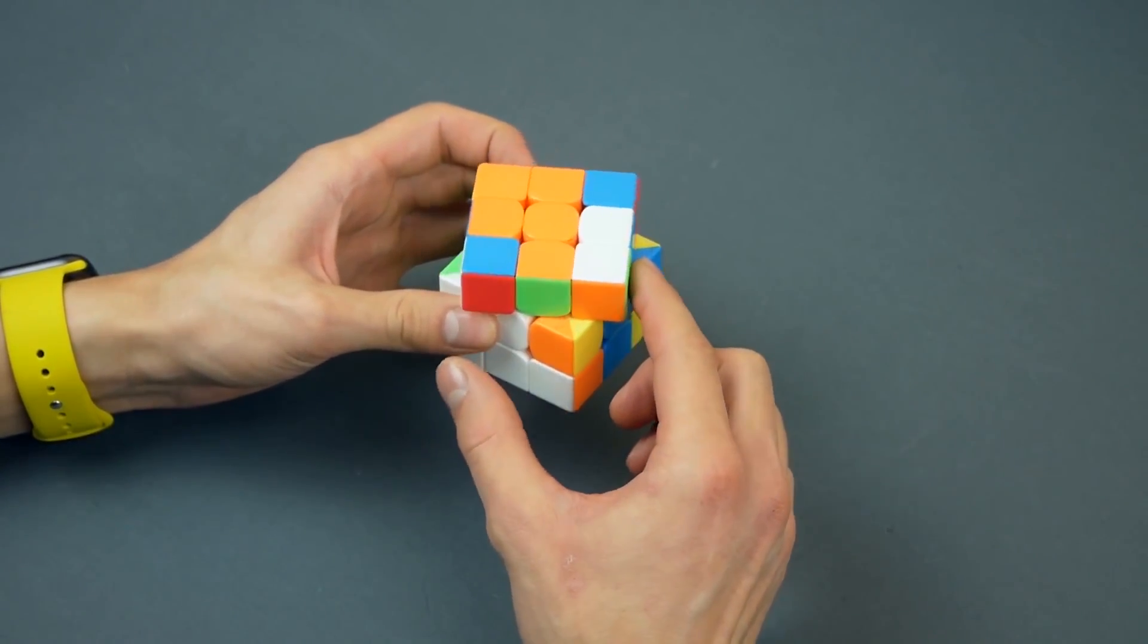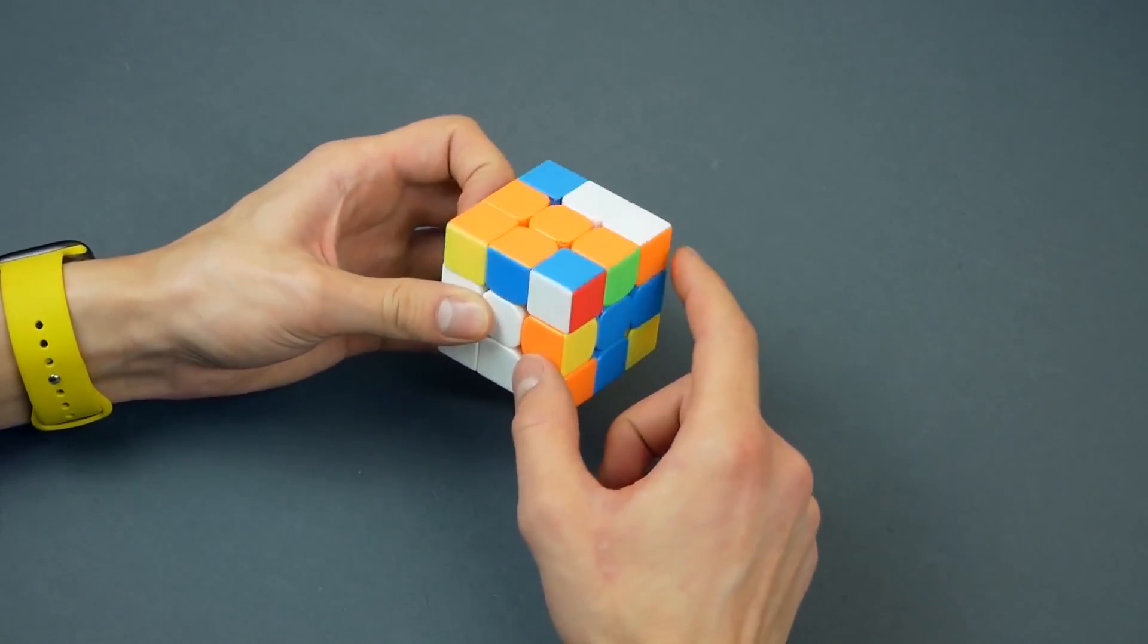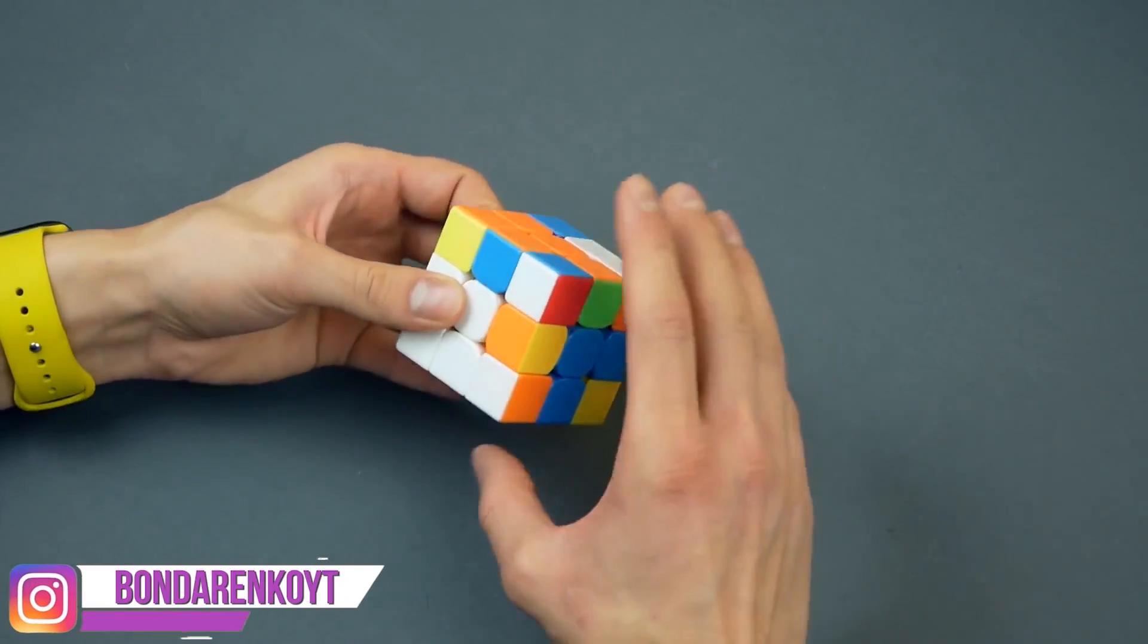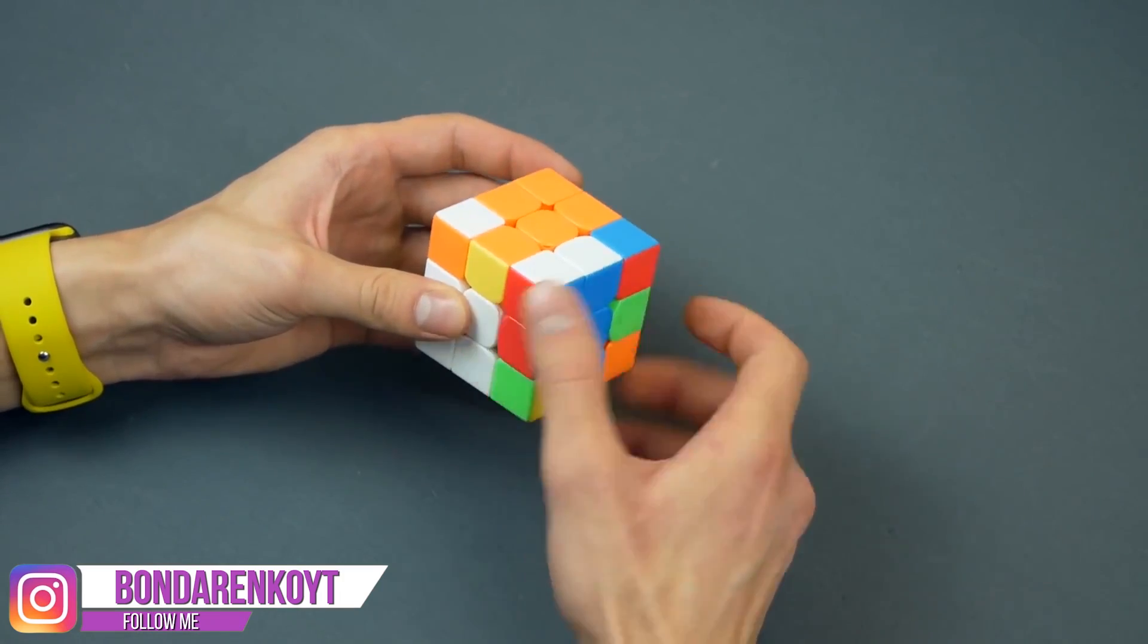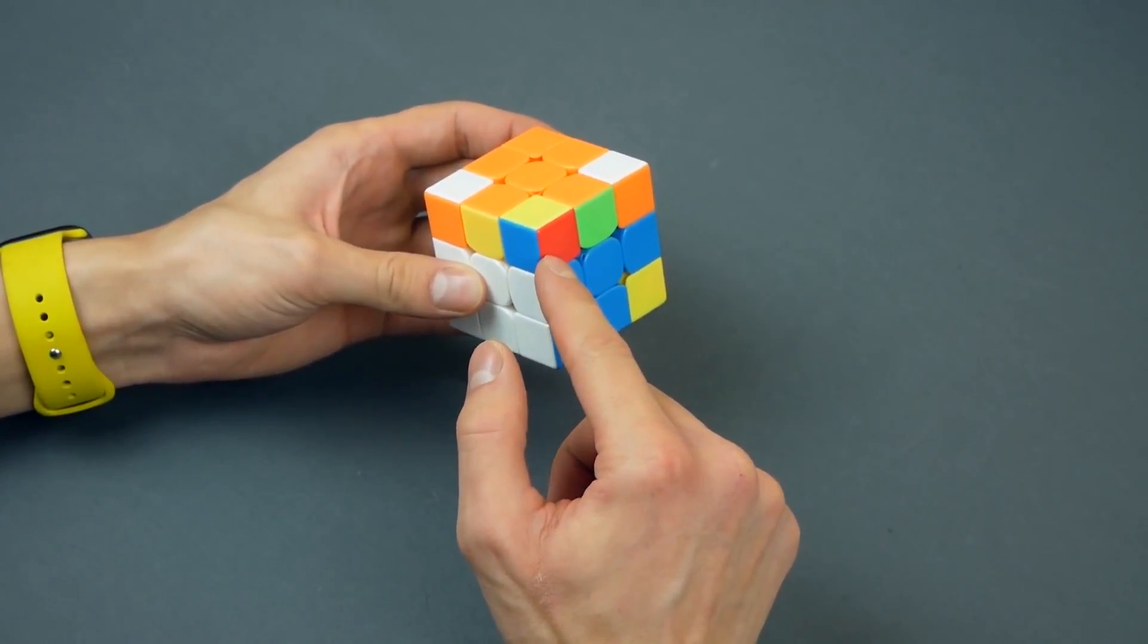Next, using the Friedrich's method, he needs to solve first two layers. He turns the top and sees the easiest three-move opportunity, one, two, three. Puts this pair on its place, but he doesn't stop here.